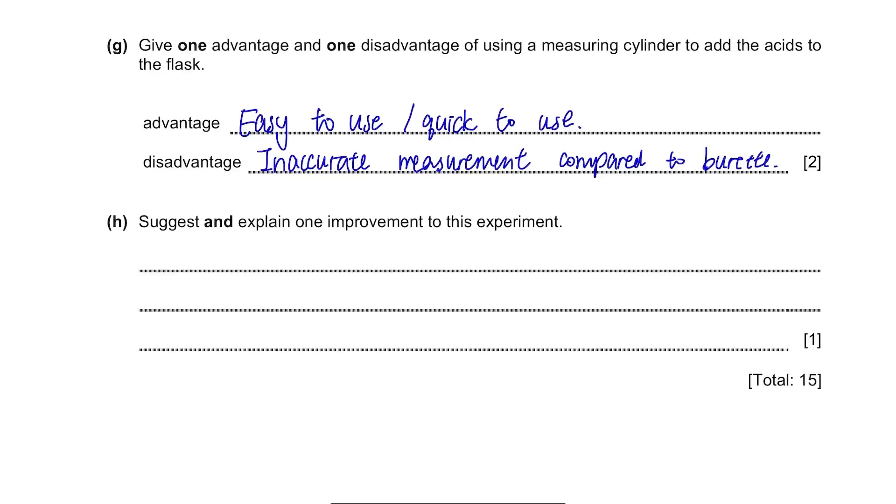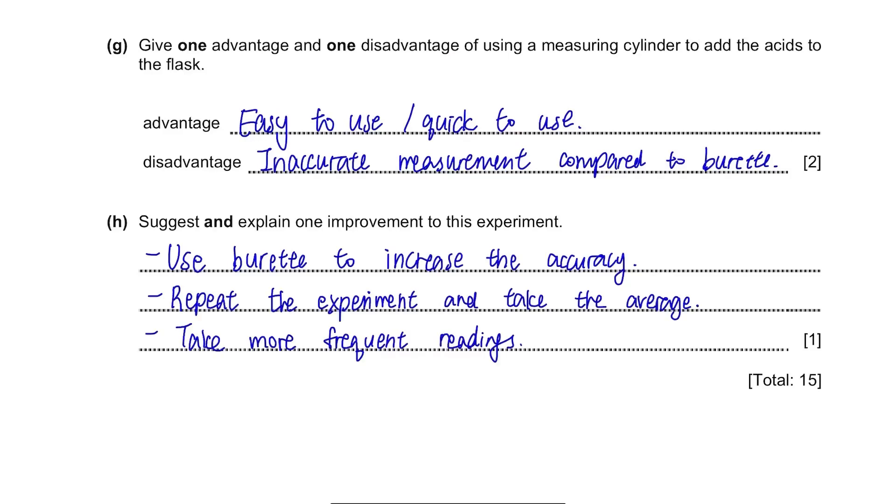Part H. Suggest and explain one improvement to this experiment. There are lots of possible answers to this. Well, like I just mentioned, we can use a burette to increase the accuracy of the measurement taken. We can repeat the experiments and take average or just take more frequent readings to draw a more accurate graph. Also, instead of using magnesium strips, we can calculate the mass of magnesium and put them in since the strips may differ in mass from one another.